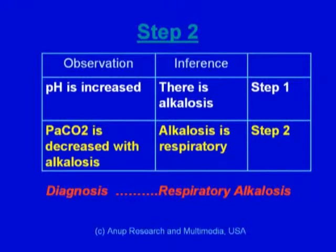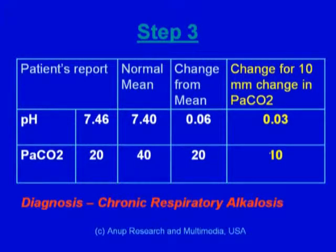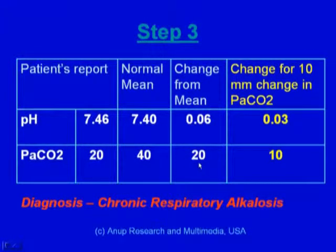So easy — we have already completed two-thirds of the diagnosis for this patient. In step 3, we look for the change in pH for every 10 millimeter change in PaCO2. The PaCO2 here is 20, and the normal mean is 40, so the PaCO2 has fallen by 20. The pH is 7.46 in this patient and the normal mean is 7.40, so the change from mean is 0.06.